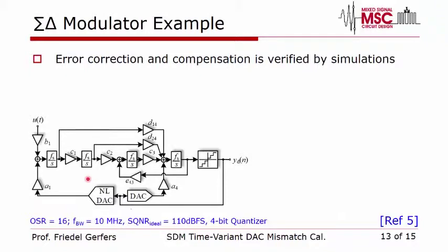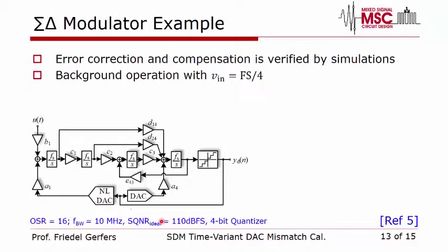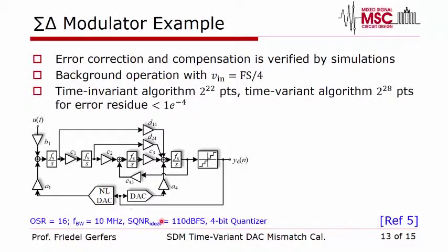To prove this architecture we use a test vehicle: a fourth-order Sigma-Delta modulator with a 4-bit quantizer, yielding 110 dB idle quantization noise performance in simulation. We use background calibration with a sine wave at one-quarter of full-scale amplitude. With a sufficient number of points we are able to fully calibrate the Sigma-Delta, assuming a target close to the 110 dB SNDR.